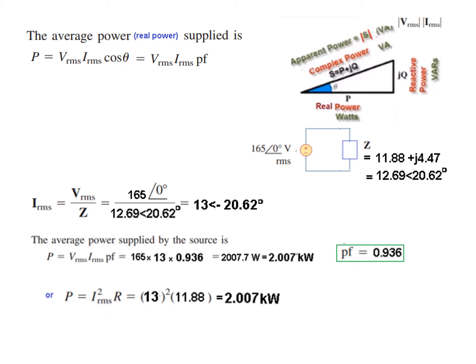We can also calculate directly using the I²R formula, where the real part of the impedance is 11.88 ohms. This gives the same answer of 2.007 kilowatts. Thank you.